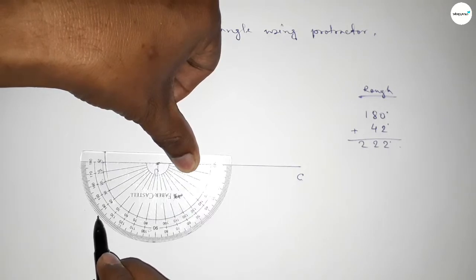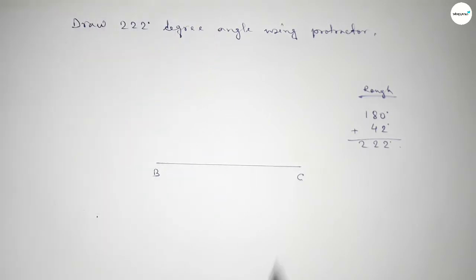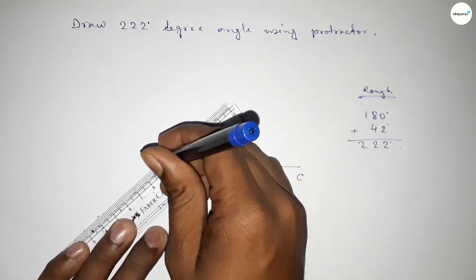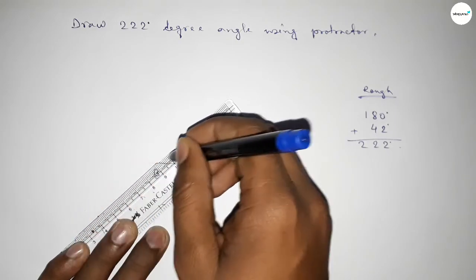So by adding 42 degree angle with 180 degree, then we get 222 degree angle. Now joining this side and taking here a point A.